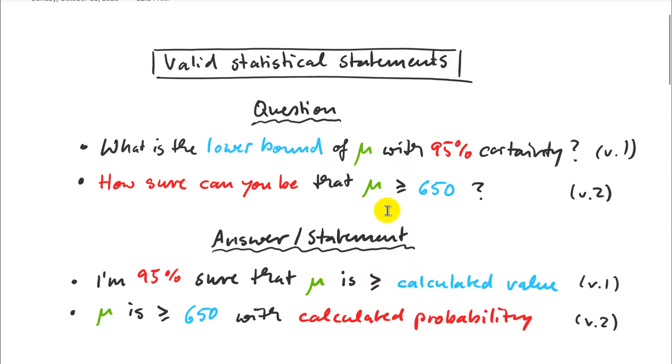But then we could also do that calculation or unit conversion from axis to axis the other way and ask a slightly different question. So that was a one-sided, one-sample t-test. How sure can you be that mu is larger than 650? So that's our arbitrary bound. We set this first, and then we calculate the probability. And the answer is my true population mean is larger than 650 with that particular probability, 99.3%. So those were both useful and powerful statements.